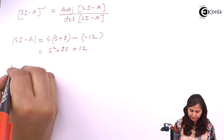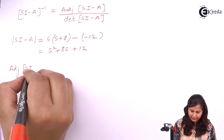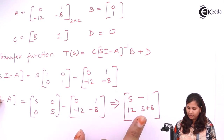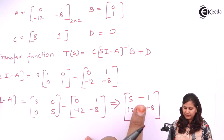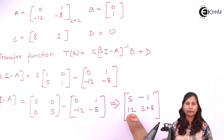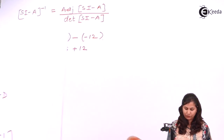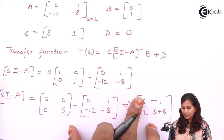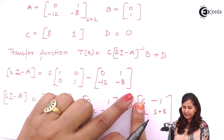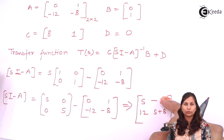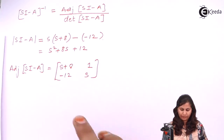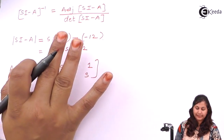Now we calculate the adjoint of (sI - A). We reverse the diagonal elements so s+8 comes to position (1,1) and s comes to position (2,2), and we change the signs of the off-diagonal elements. So the adjoint is [s+8, 1; -12, s].